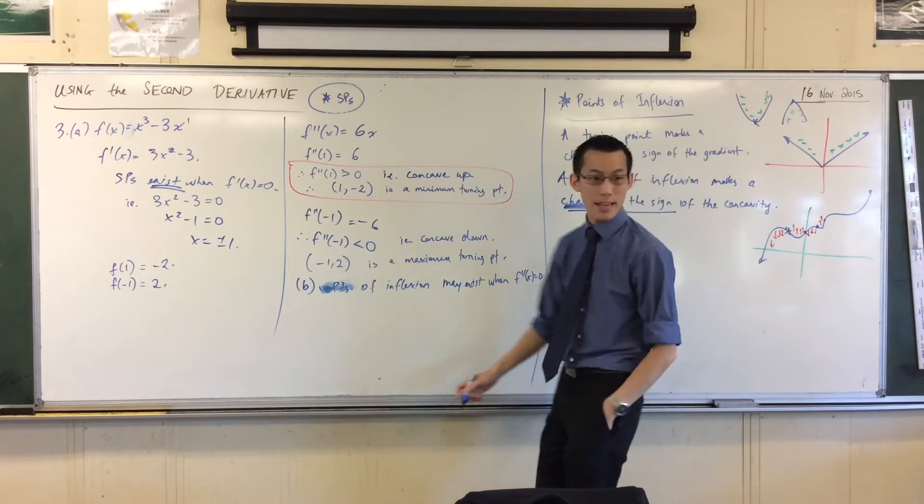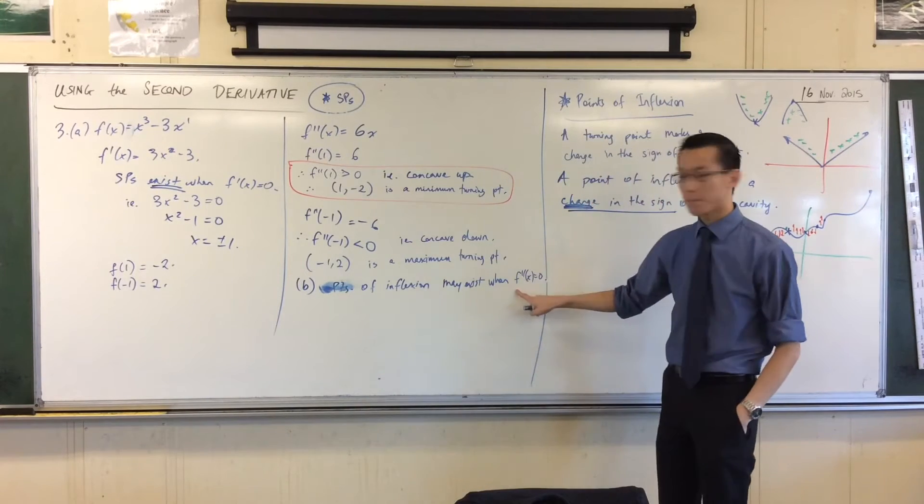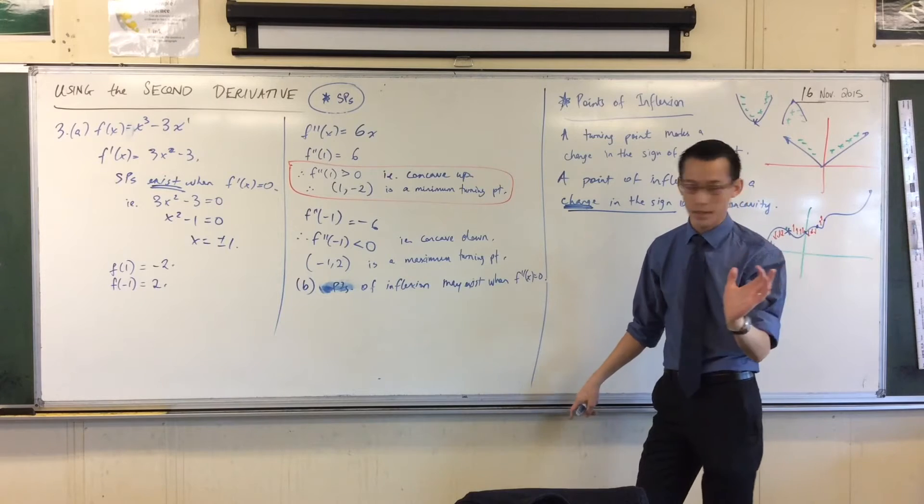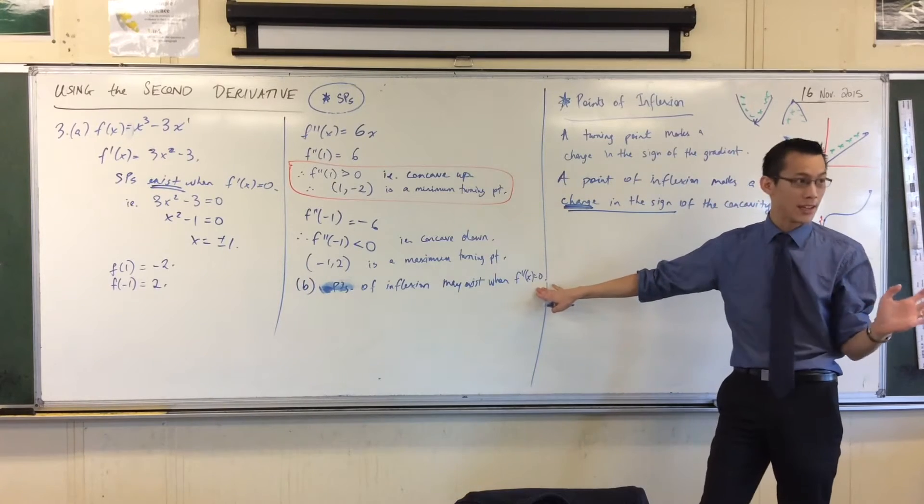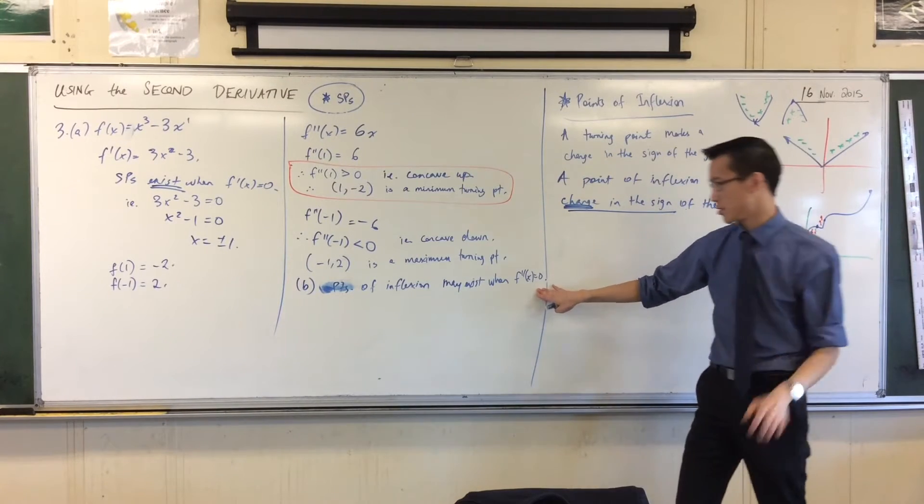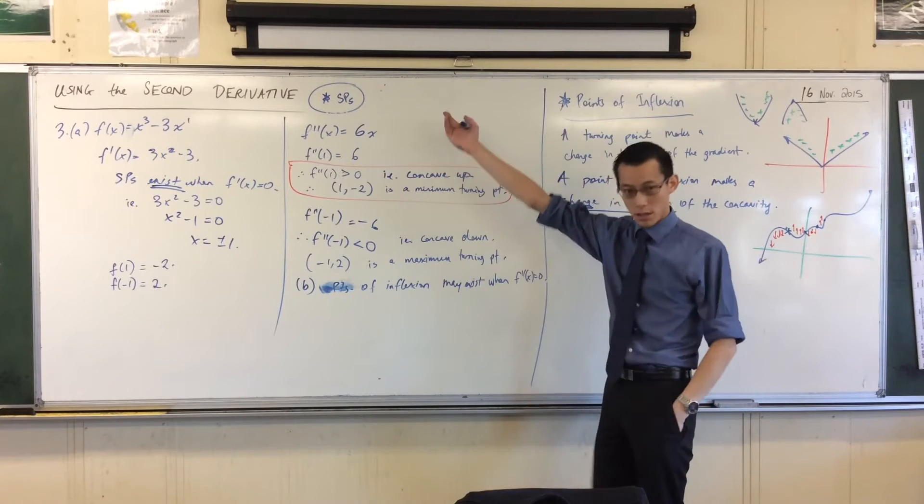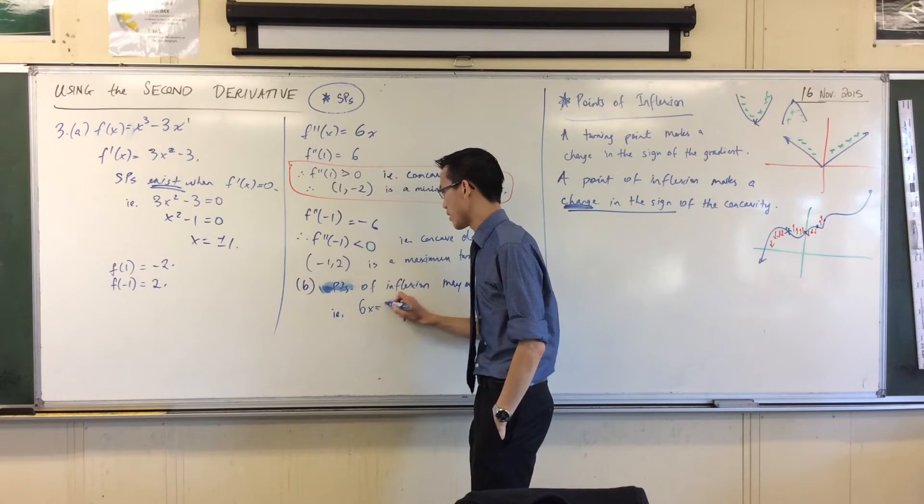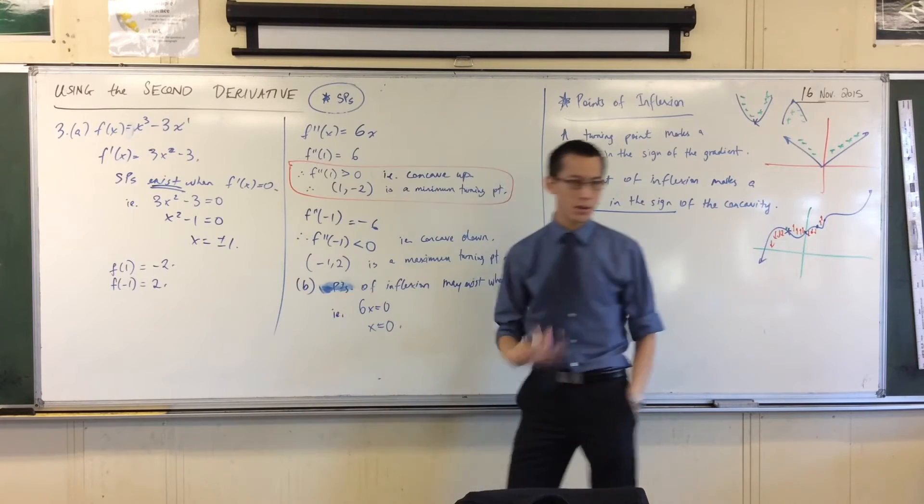So I'm going to solve this thing. F double dash? Yep. So I'm looking for concavity now. I'm looking for when there is no concavity, because that is a likely place where it will change. So I'm just going to solve 6x equals zero, so x equals zero. No problem.